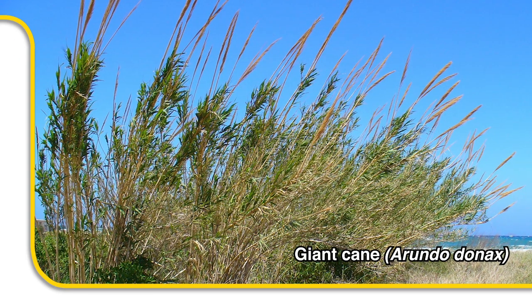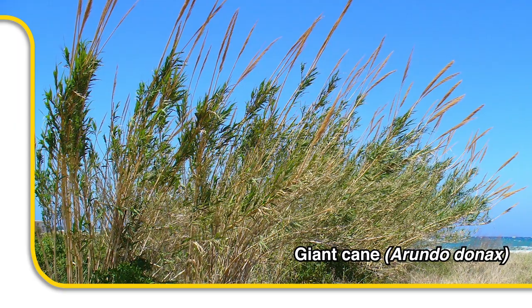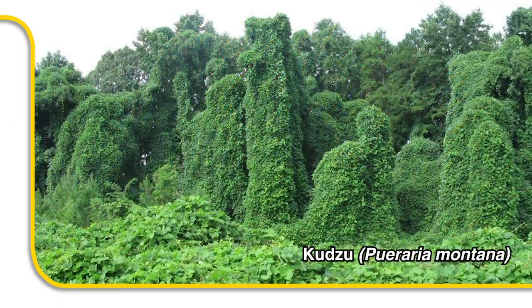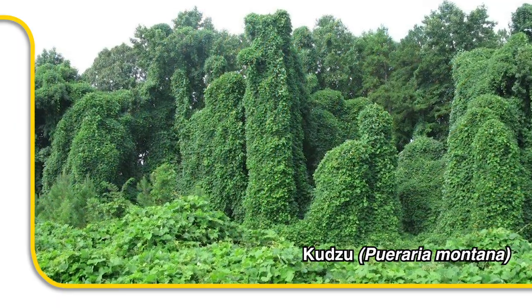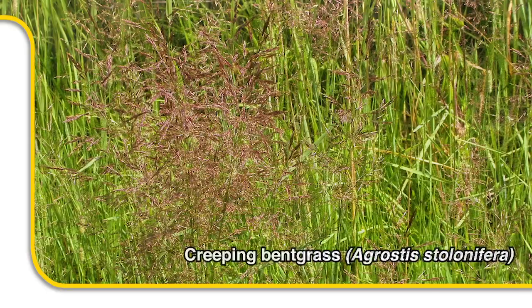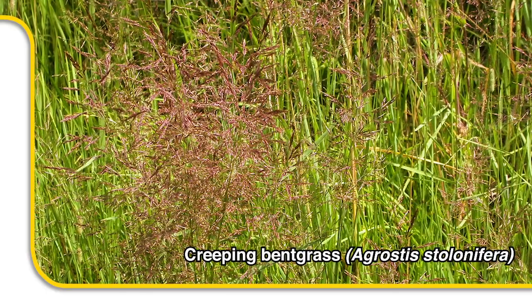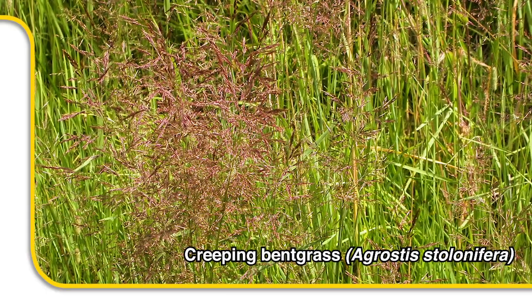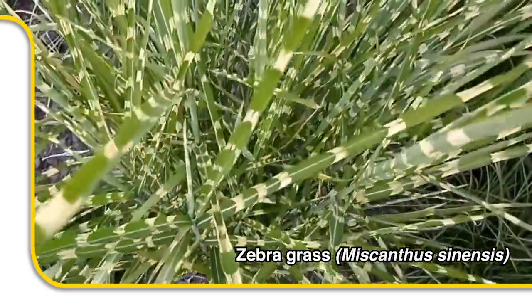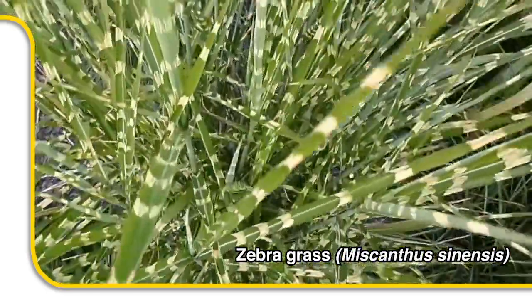Invasive species can be useful. For example, as biofuel, trees, shrubs and grasses are all good candidates. In agriculture, by the way, GMOs cannot be used in an IDB project if they are potentially invasive.